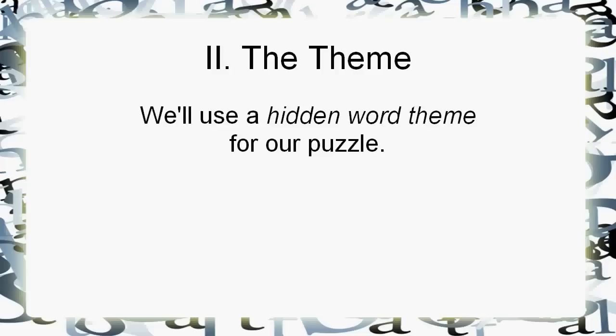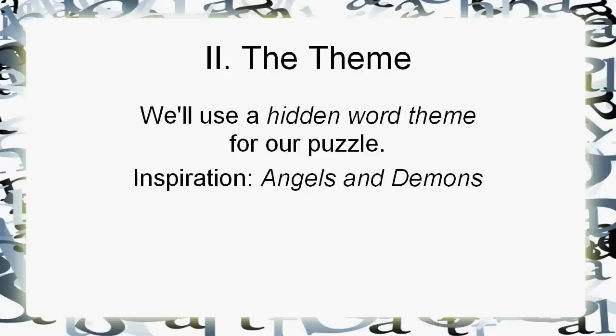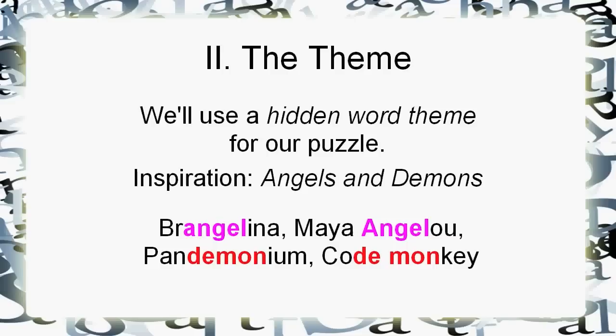Now there are lots of themes you might have seen, but we're going to use a hidden word theme for our puzzle. The inspiration is the book and movie Angels and Demons. The theme's not going to have anything to do with the story — all we're going to do is take the word angel and the word demon and hide them in certain phrases, like Brangelina, Maya Angelou — those have a hidden angel — and pandemonium and code monkey. Notice with code monkey the demon is split across two words, which is actually a good thing. You want to try to make these entries as fun as possible.